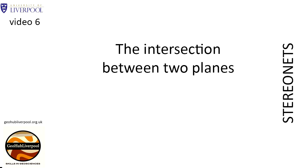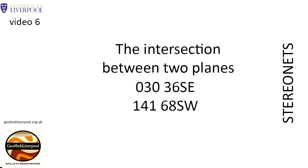In this clip, two planes are plotted as great circles to show how you can work out the plunge and plunge direction of the lineation. One plane has a strike of 030 degrees and a dip of 36 degrees towards the southeast. The other plane has a strike of 141 degrees and a dip of 68 degrees towards the southwest.